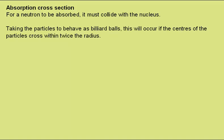The absorption cross-section is important. For a neutron to be absorbed, it must collide with the nucleus. Taking the particles to behave as billiard balls, this will occur if the centres of the particles cross within twice the radius, as I can demonstrate here. Here we have a billiard ball and another billiard ball passing at this point just collides. This arrow marks the centre of the path of the top billiard ball. One passing down here will just collide. This arrow marks its centre. The absorption cross-section here is twice the radius of the balls or twice the radius of the particles.